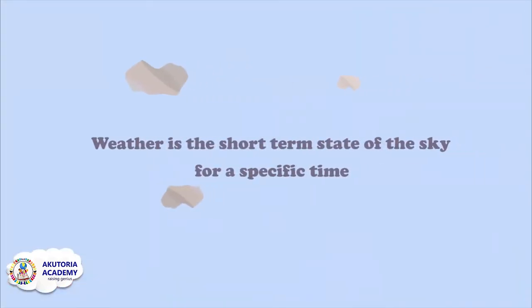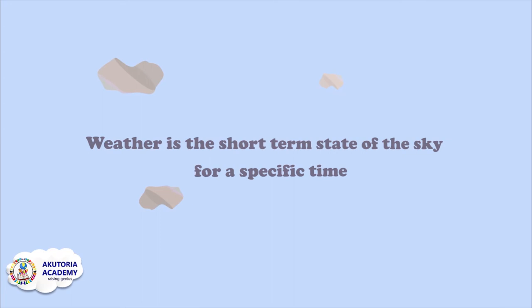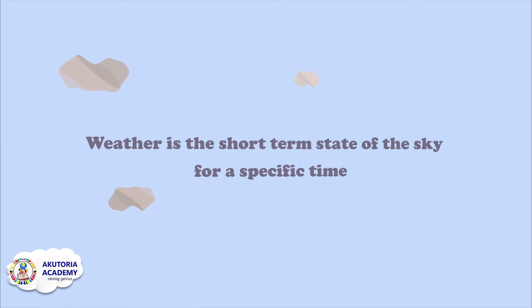Weather is the short-term state of the sky for a steady time. For example, when the sky is full of dark clouds and the rain droplets begin to fall, we will say the weather is rainy. But when the sun is up and no sign of rain and clouds, we will say we have a sunny weather.